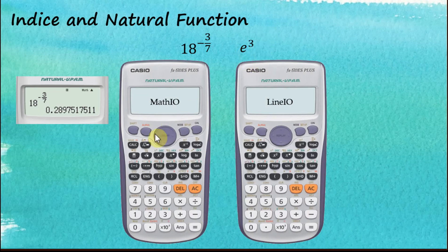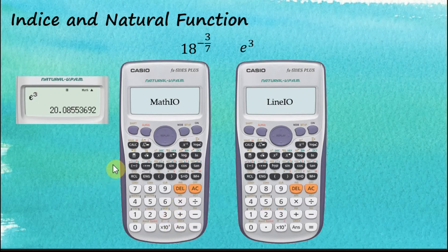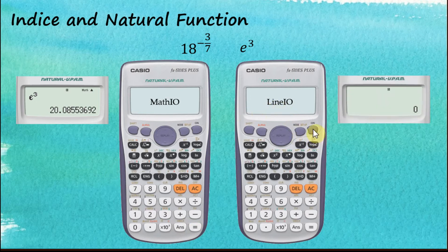Now for e to the power of 3 — e is somewhere around here. This button is for e natural functions, so press Shift then e, then 3, and equal. That's pretty easy.